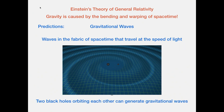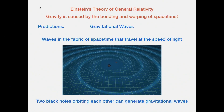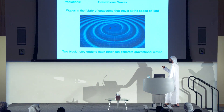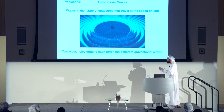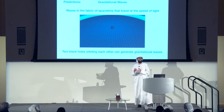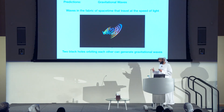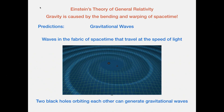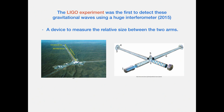Next is gravitational waves — another prediction: waves in the fabric of space time that travel at the speed of light. Here's a simulation of two black holes orbiting each other. This is a simulation of an actual observation. These are two small black holes and you can see the waves going away. Once they coalesce, there's nothing changing anymore. This was detected by the LIGO experiment in the United States back in 2014, and they have detected many other events since then.